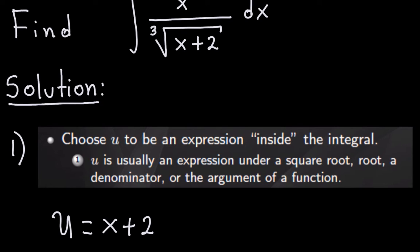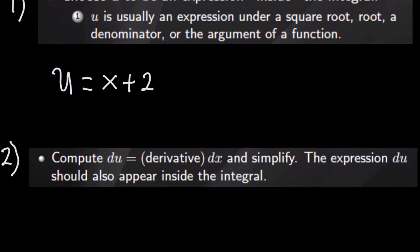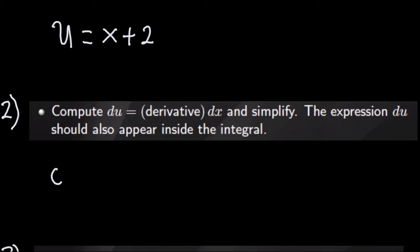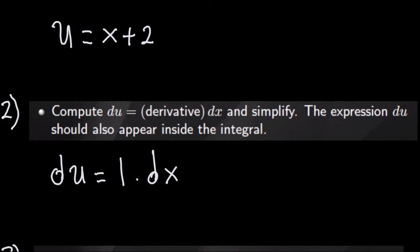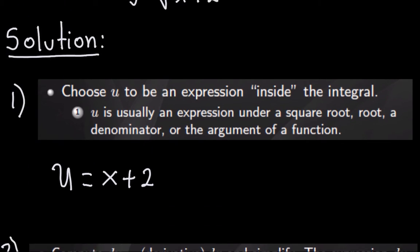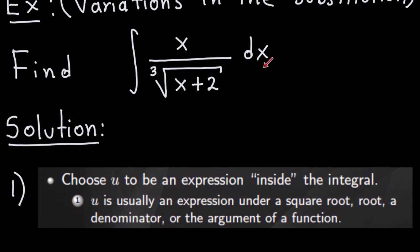The second thing is finding du. So du will be the derivative of x plus 2. The derivative of x is 1, and the derivative of 2 is 0, so it's just 1 dx. Now this du appears in the integral — that's the dx you see here. So x plus 2 is u and the dx is the du. But I still have an x there that I need to substitute with u, because when you do the substitution you should write everything inside in terms of the variable u.